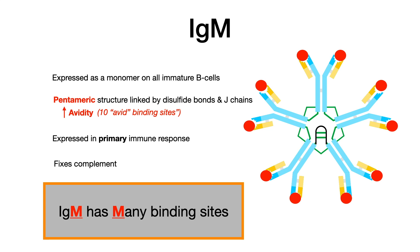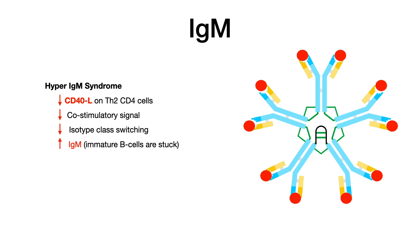Clinically, IgM is associated with hyper-IgM syndrome. This is due to decreased CD40 ligand on the TH2 CD4 cells. If CD40 ligand cannot bind, you lose the co-stimulatory signal responsible for encouraging class switching. Because IgM is the default isotype, if you don't get class switching, you're never able to change IgM into other isotypes. The immature B cells are stuck with IgM expressed on them.